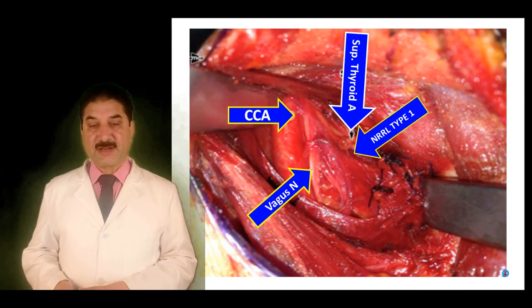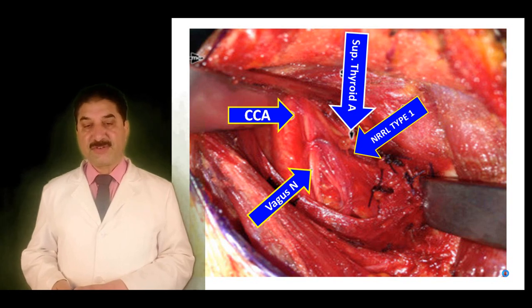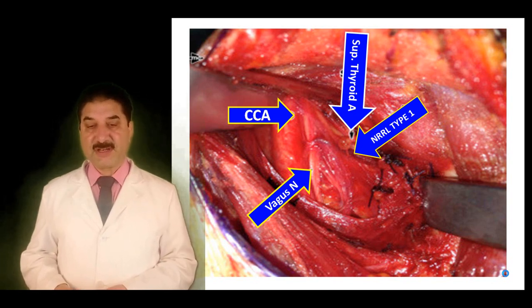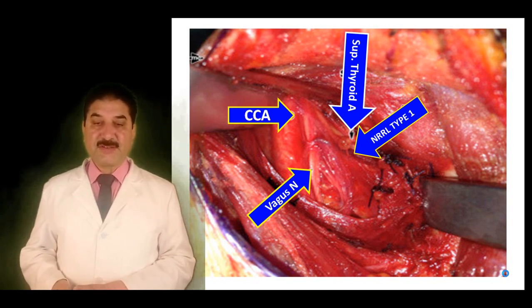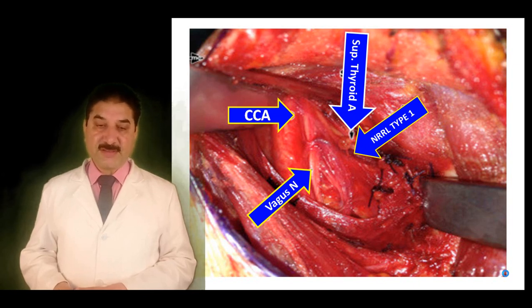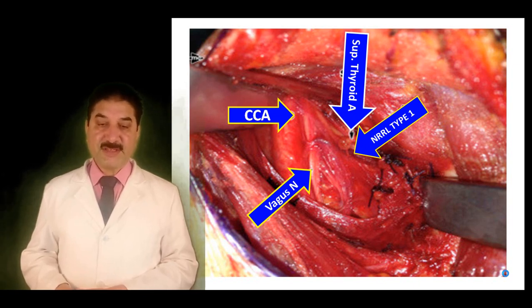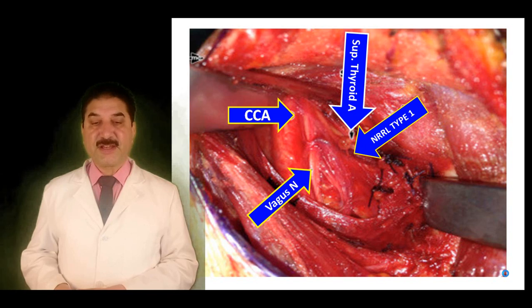In this diagram we can see the origin of the superior thyroid artery and the non-recurrent laryngeal nerve Type 1 arising from the vagus and passing with the superior thyroid artery.